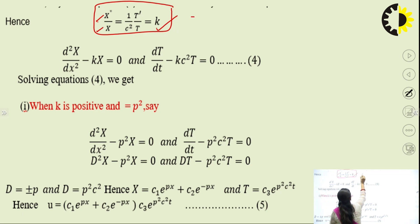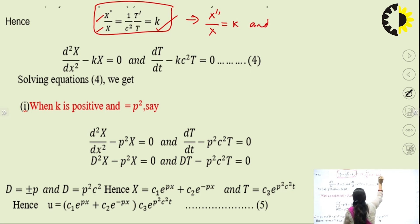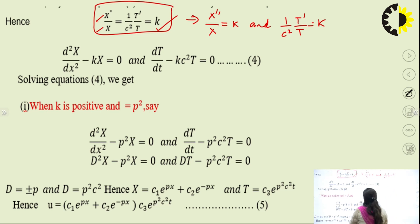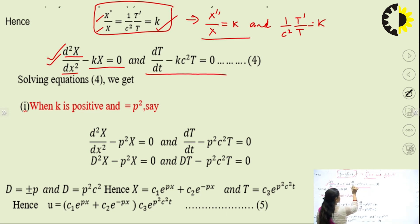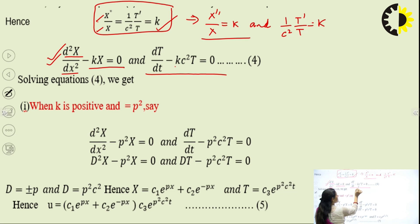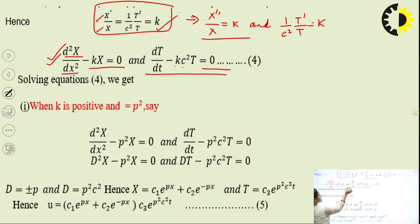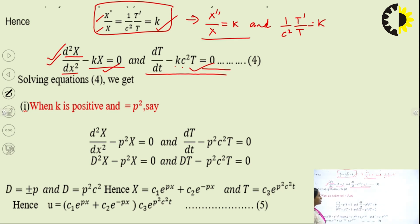Writing these in derivative form, we get two ODEs: d²X/dx² − kX = 0, and dT/dt − kc²T = 0. On solving these equations, we get some solution. But the question is: what value should k take? k can be positive, negative, or zero, so let us consider all three cases.